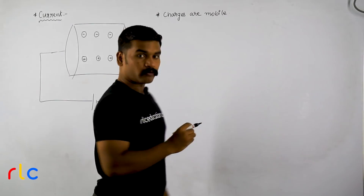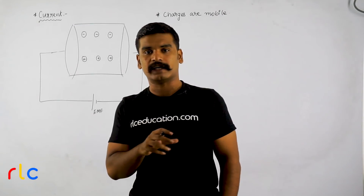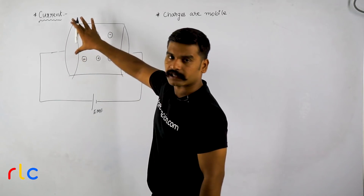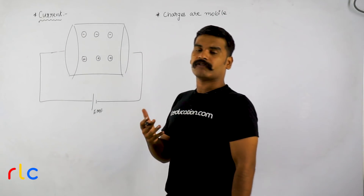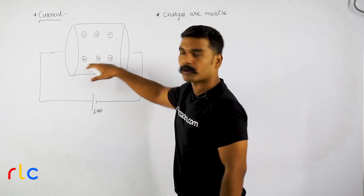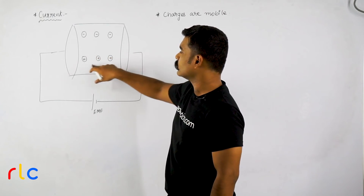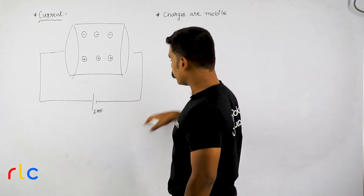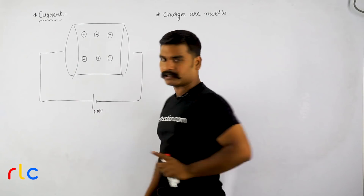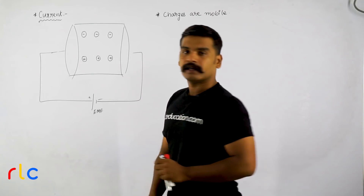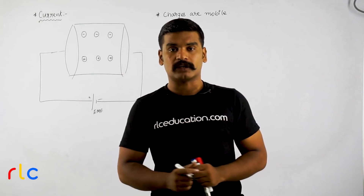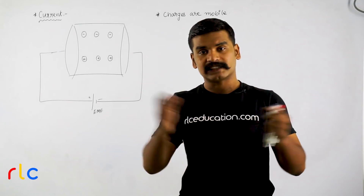Now let us see how charge will move in a conductor or in any electric circuit. Taking a specimen of a conductor — every material is made up of subatomic particles like electrons and protons. I am applying some EMF (electromotive force) or some voltage using a battery. This battery has two plates: a positive plate and a negative plate.